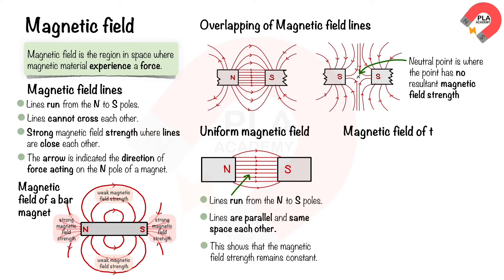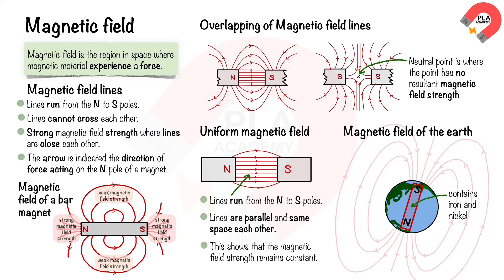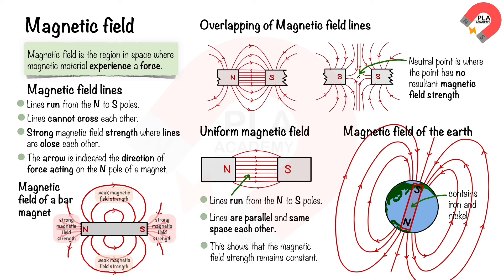The magnetic field lines around the earth: inside the inner core there is iron and nickel, which are magnetic materials, causing the core of the earth to act as a magnet. The north pole of the earth corresponds to the south pole of this internal magnet, and the south pole of the earth corresponds to the north pole. The magnetic field lines of the earth run from the geographic south to north. The needle of a compass always points to the north pole of the earth — the needle is itself a magnet, and its arrow end is the north pole, which is attracted to the south pole of the earth's internal magnet. This shows that the needle of a compass will always point in the same direction as the magnetic field line.